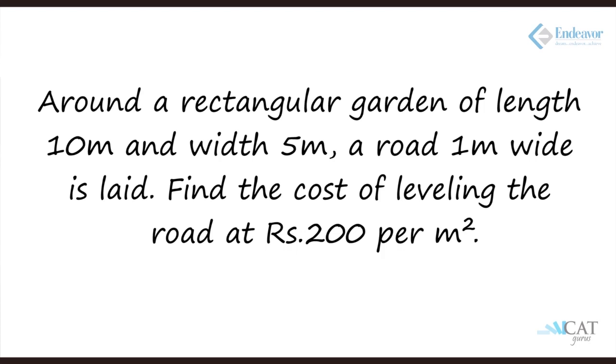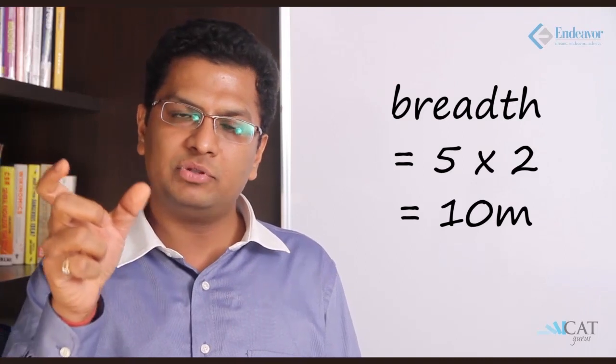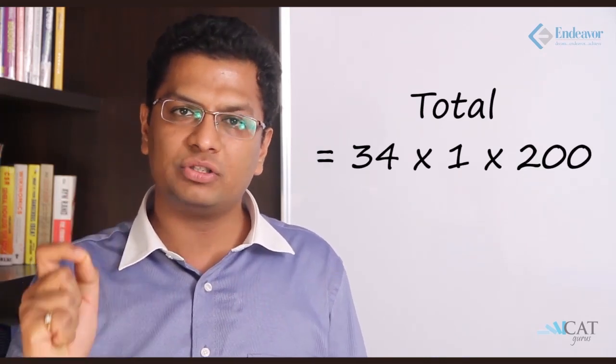Let's have a look at another example. Around a rectangular garden of length 10 meters and width 5 meters, a road of 1 meter is laid. Find the cost of leveling the road at 200 rupees per square meter. The length of the road along the length will be 1 meter beyond on top and 1 meter beyond on the bottom, so it will be 12 meters — similarly 12 meters on the other side. For the breadth, we've already covered the extra 1 meter, so each breadth side is 5 meters, giving 5 below and 5 up, totaling 10. So 12 plus 12 plus 10 gives 34 meters total length, multiplied by the 1 meter width, then multiplied by the cost of 200, giving a total cost of 6,400 rupees.